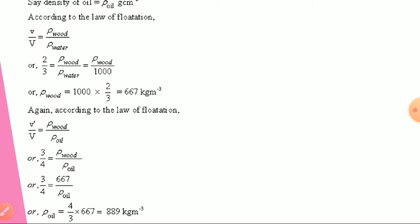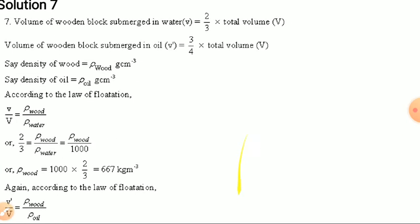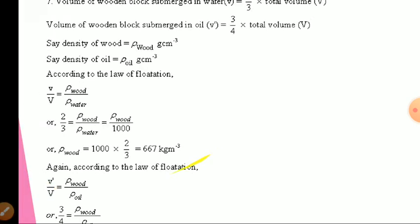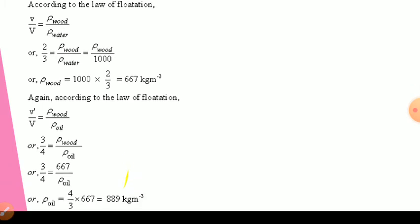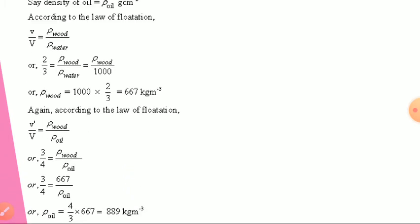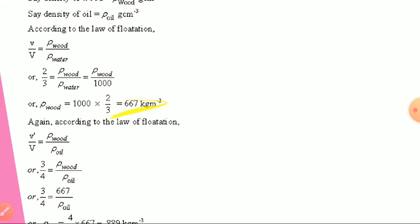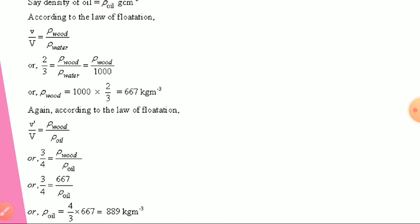Now taking the condition for oil: the volume of wooden block submerged in oil is three-fourths of total volume. So three-fourths equals 667 (ρ_wood, which we already found) upon ρ_oil. From this we get ρ_oil equals 889 kilograms per meter cube.